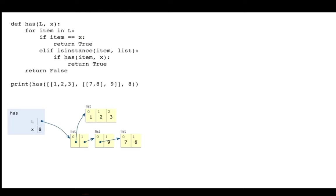If you were to put this in Python Tutor it would look something like this: l refers to a list with two entries — one is a list with the numbers 1, 2, 3, and the other is a list that contains both a list and 9. Let's trace through what the function does.